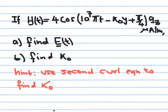A hint is given to use the second curl equation to find k_naught. For this field to satisfy Maxwell's equations, we should be able to get the electric field from one of the two Maxwell's curl equations, and then use the other curl equation to solve for k_naught.